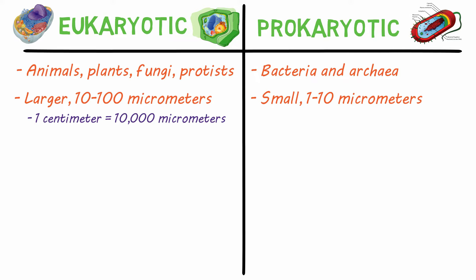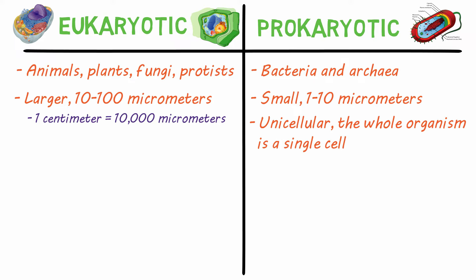Prokaryotes are unicellular, meaning the entire organism is composed of a single cell, whereas eukaryotes can be multicellular, like plants and animals, or unicellular, like phytoplankton and protozoa.